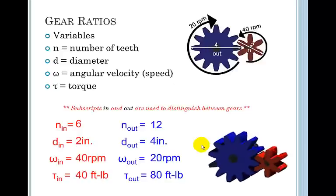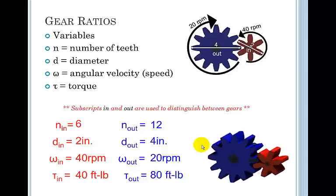So gear ratios have a number of variables and they are the number of teeth, the diameter, the angular velocity or the speed. And that funny looking W is the Greek symbol omega. A lot of times in the interest of speed, you'll see me just write that as W or RPM. And T is torque. So those things all have to be in a specific ratio. They're always related by the same ratio. So the number of teeth on the input gear, in is the driver, out is the driven. So here you can see the number of input teeth is 6 on the output gear, it's 12.